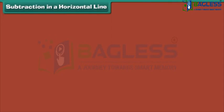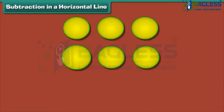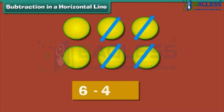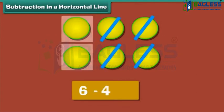Subtraction in a horizontal line. Let us now use dots to subtract numbers horizontally. To subtract four from six, we place six dots. Strike off four dots. Two dots remain. Therefore, two is the answer.